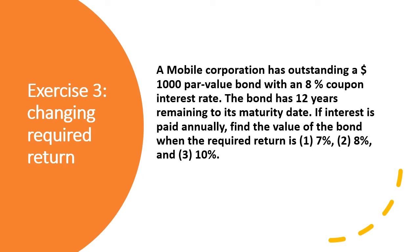Now we will show the impact of changing the rate of return on bond value. Suppose a mobile corporation has an outstanding bond with a face value of 1,000 dollars, an 8% coupon interest rate, and 12 years remaining to maturity. If interest is paid annually, find the bond value when the required return is 7% (scenario one), 8% (scenario two), and 10% (scenario three).